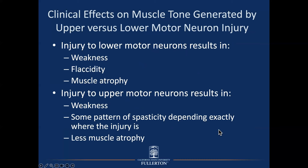Clinical effects on muscle tone generated by upper versus lower motor neuron injury. Injury to lower motor neurons results in weakness, flaccidity, and muscle atrophy. Injury to upper motor neurons results in weakness and some pattern of spasticity, depending on exactly where the injury is — up at the cerebral level versus midbrain versus spinal cord — with less muscle atrophy than in lower motor neuron lesions.